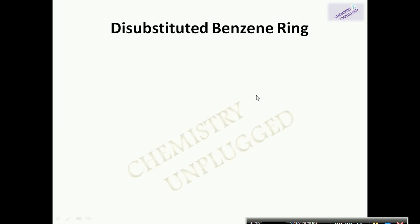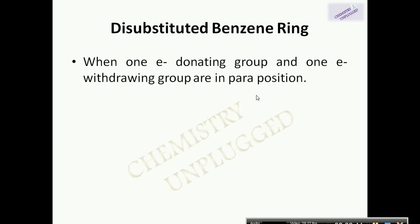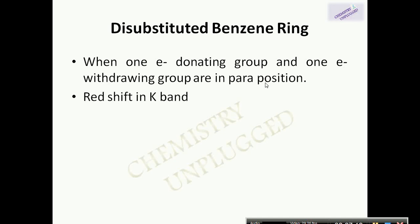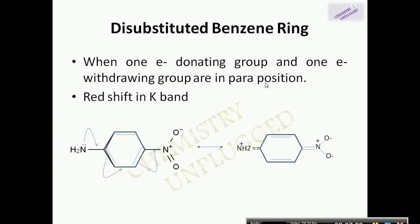Disubstituted benzene ring: when a benzene ring is disubstituted, the position of the K band depends upon the type of substituent and their position. When substituents are complementary to each other — meaning one is electron donating and the other is electron withdrawing — and they are at the para position to each other, the K band shows a redshift. Because this type of system favors the extension of the chromophore or extension of conjugation, leading to a redshift.